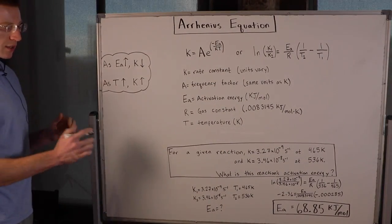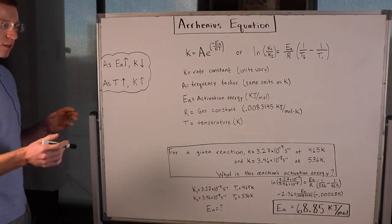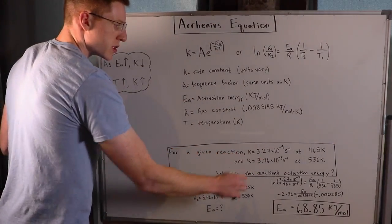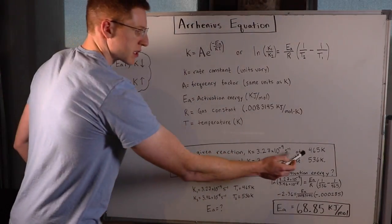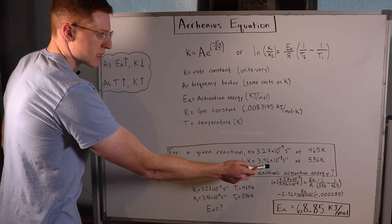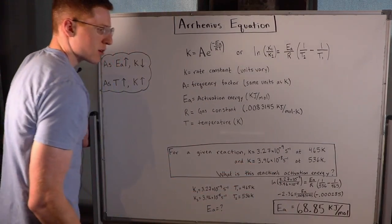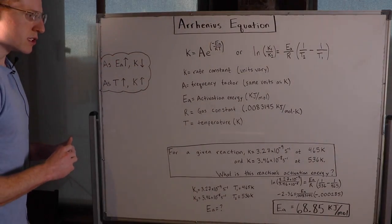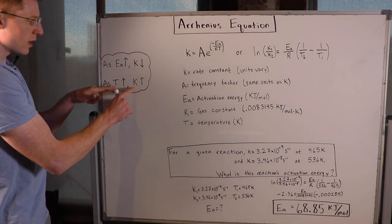I've got a problem here. For a given reaction, k is 3.27×10⁻⁹ at 465 kelvin, and k is 3.46×10⁻⁸ at 536 kelvin. You can see that our principle held true.